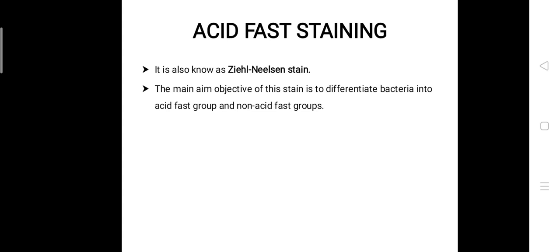Neelsen in 1883 used Ziehl carbolfuchsin as fuchsin and then decolorized with an acid alcohol and later on counter stained with methylene blue dust. The Neelsen staining technique was developed.